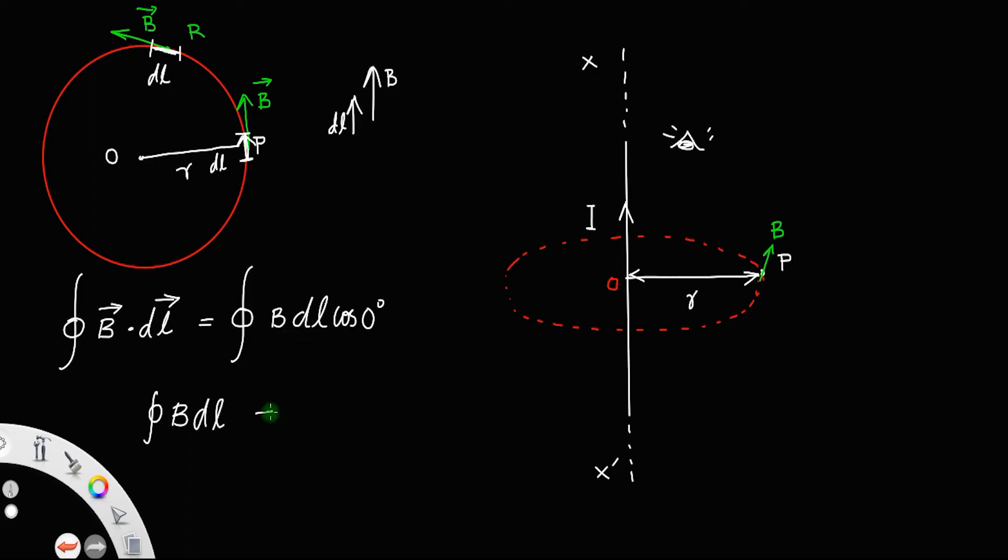Now, we already derived an expression for the magnetic field due to an infinite long conductor at a distance R. We know that will be B equal to mu 0 I divided by 2 pi R. We derived it from the Biot-Savart law.